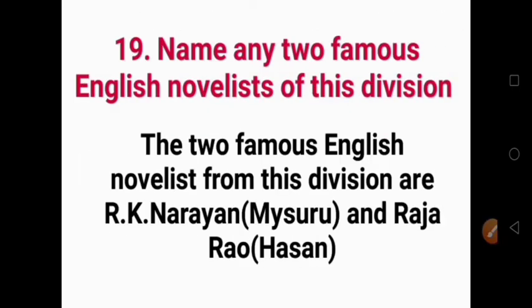Question 19: Name any two famous English novelists of this division. The two English novelists from this division are R.K. Narayan of Mysore and Raja Rao.